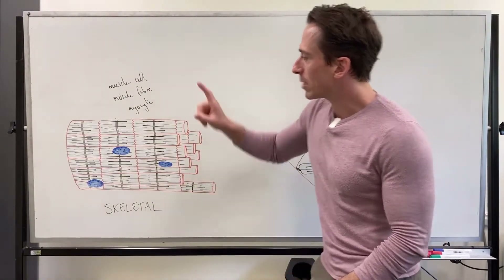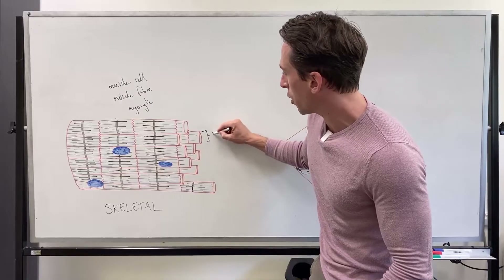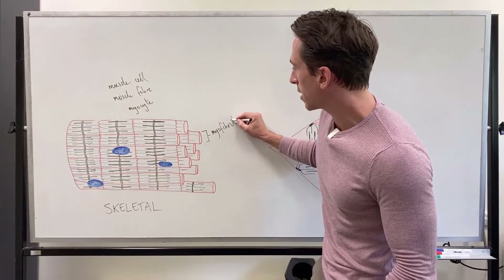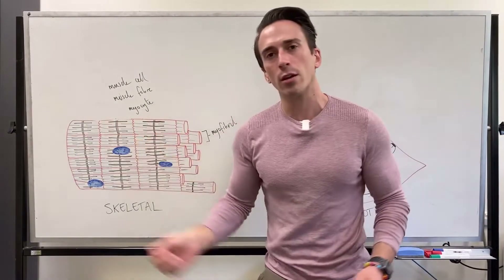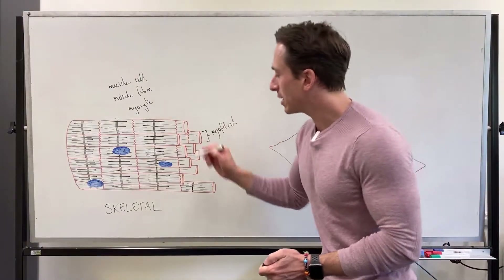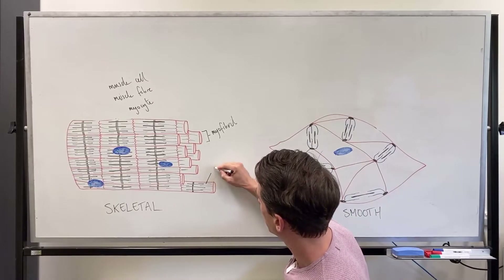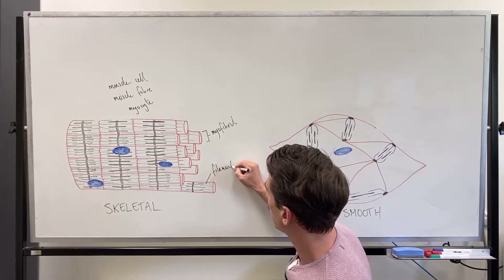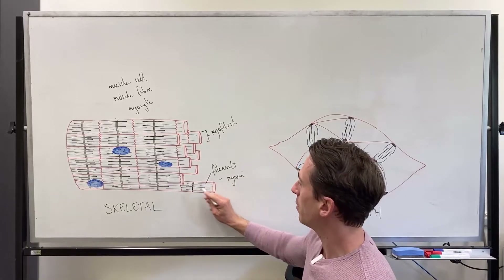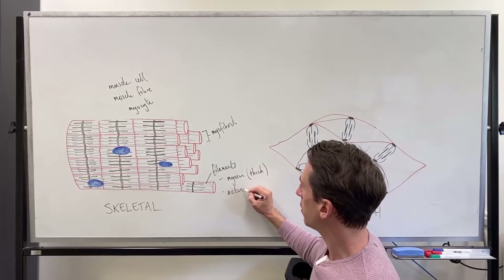A single muscle cell has what we call myofibrils — just that one piece is a myofibril. Don't get confused: this whole thing is the muscle cell, and this is a myofibril. Inside the myofibril we have all these lines — they are proteins, actually filaments, proteinaceous filaments. These myofilaments are made up of two kinds: myosin, which is the thick filament, and actin, which is the thin filament.